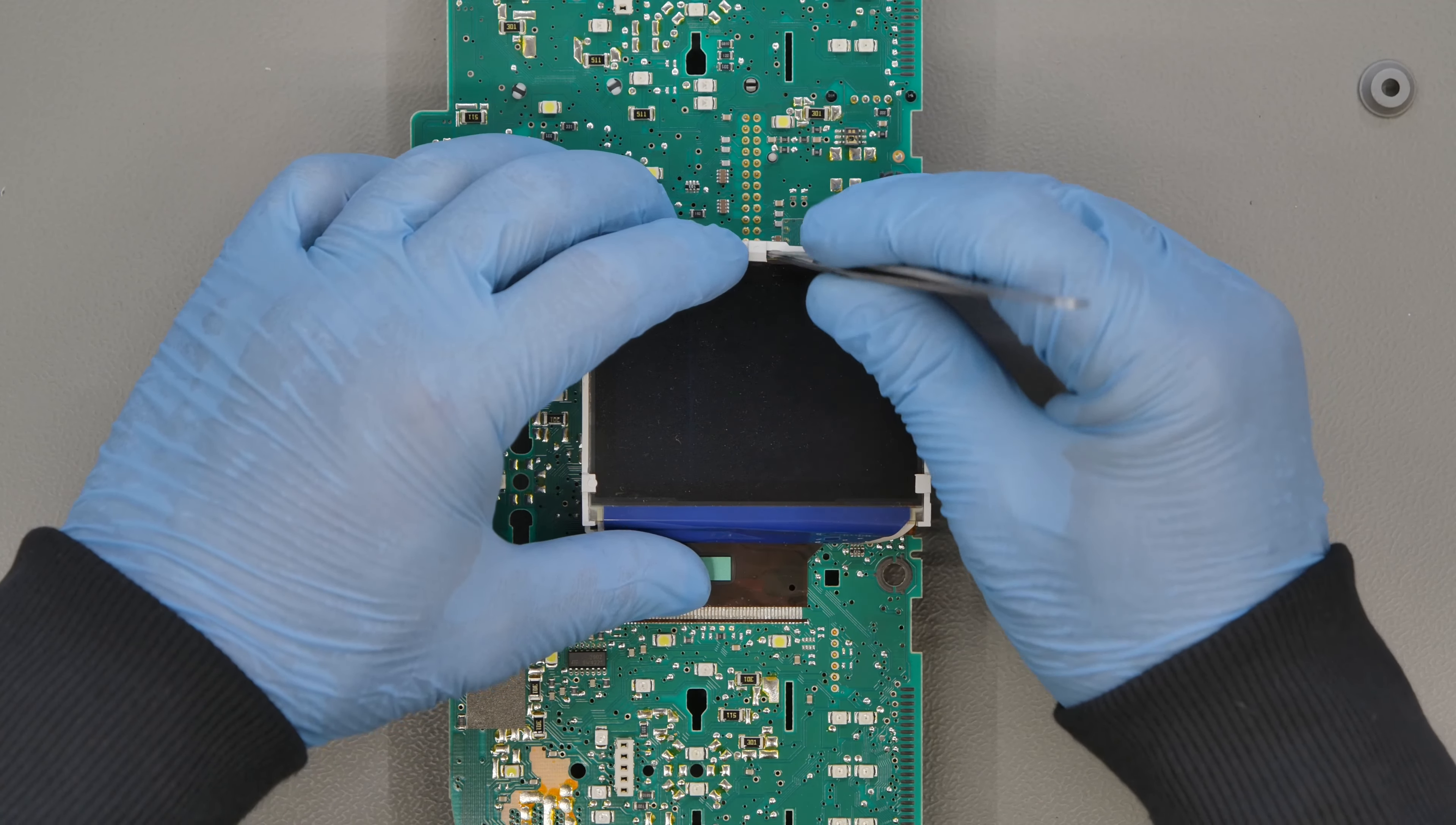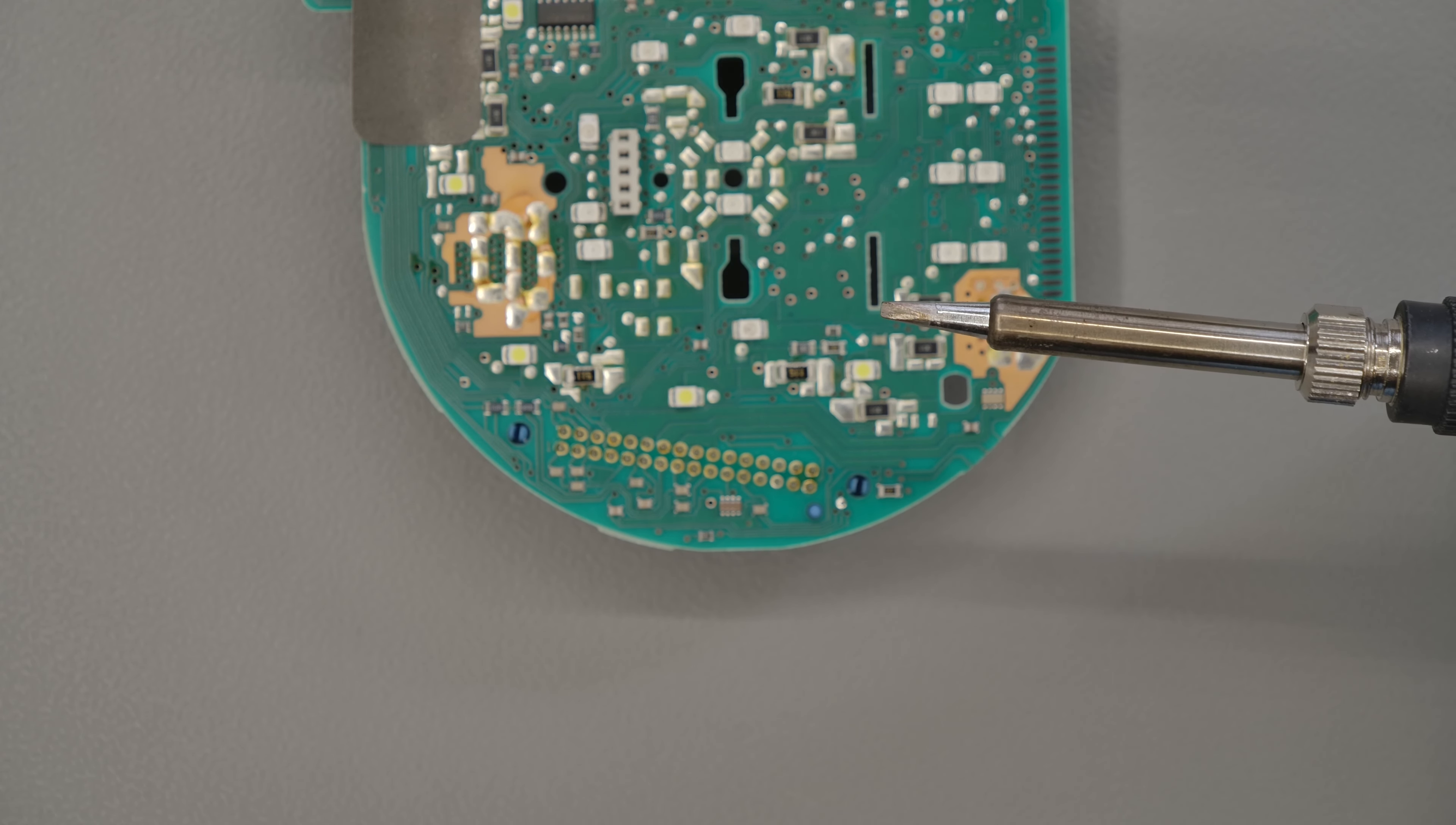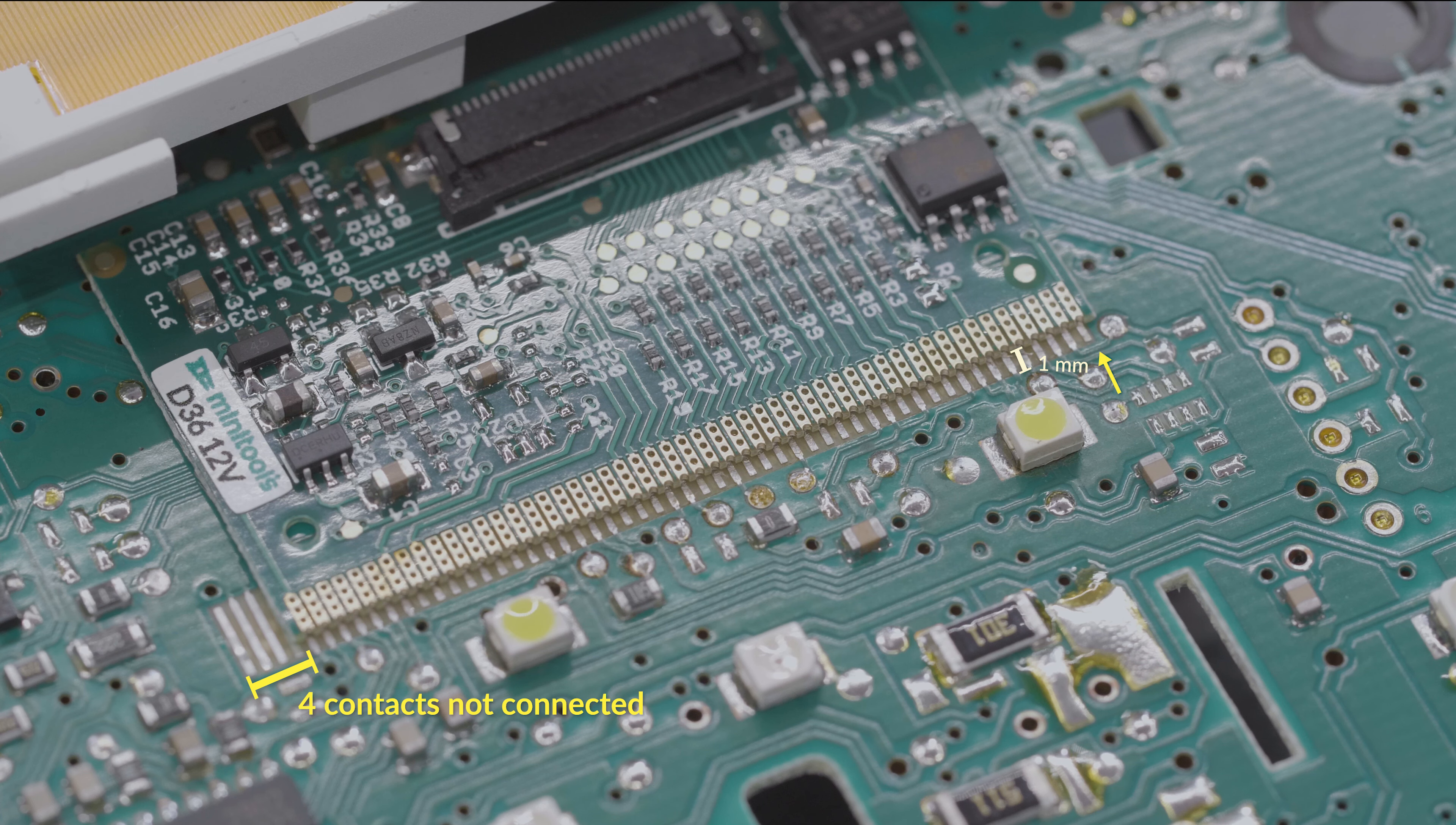Note the position of the original flat and desolder it using a hot air desoldering station. Use a soldering iron with a chiseled tip and a soldering braid to remove residual solder. Clean with solvent.